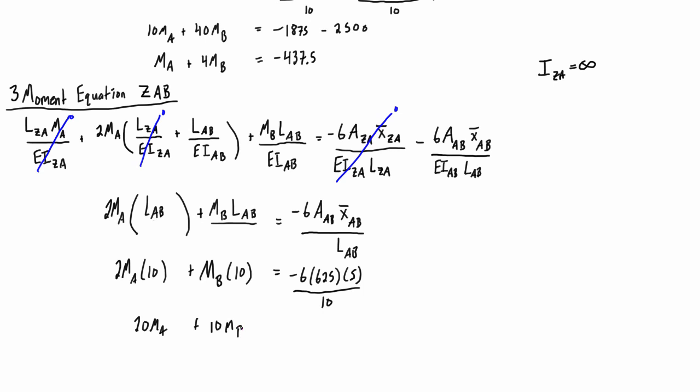And that is equal to negative 1875. And then we can also reduce that just a little bit again, and we get 2MA plus MB is going to be equal to negative 187.5.